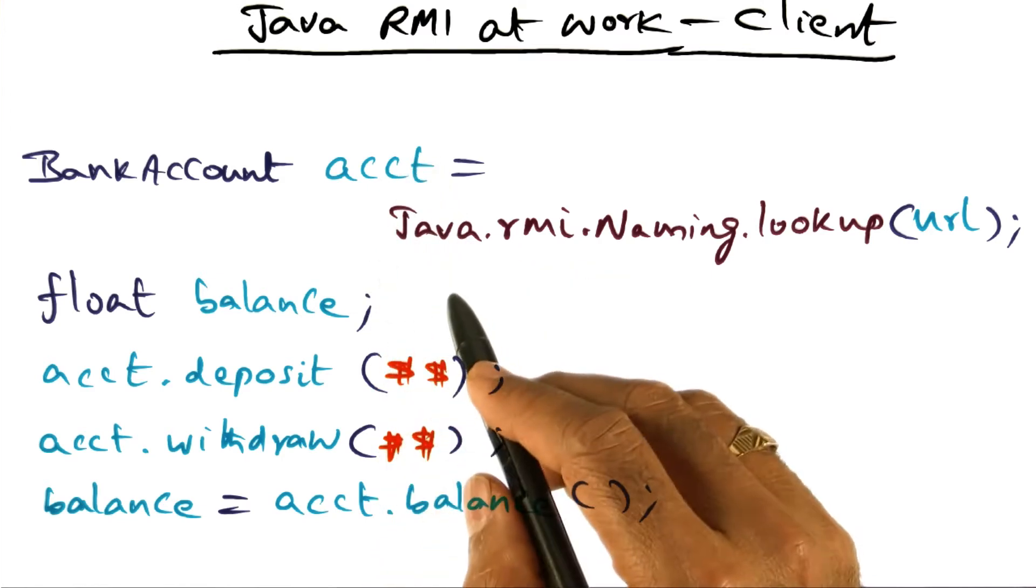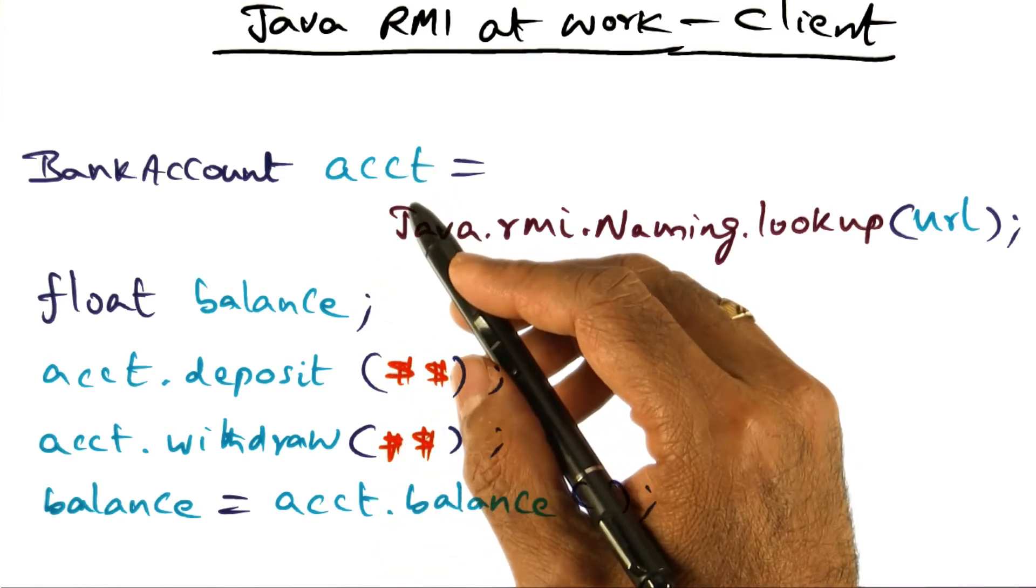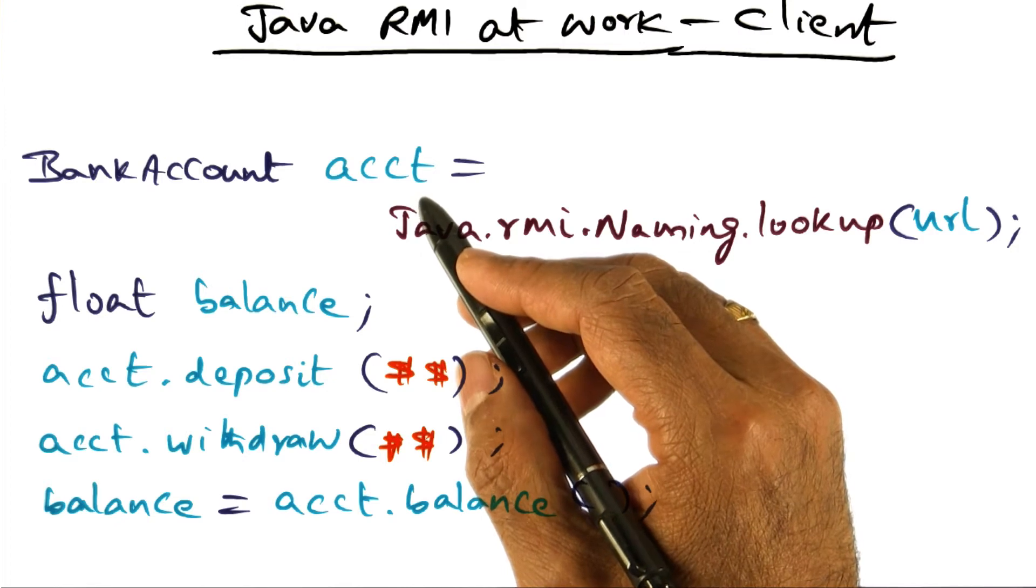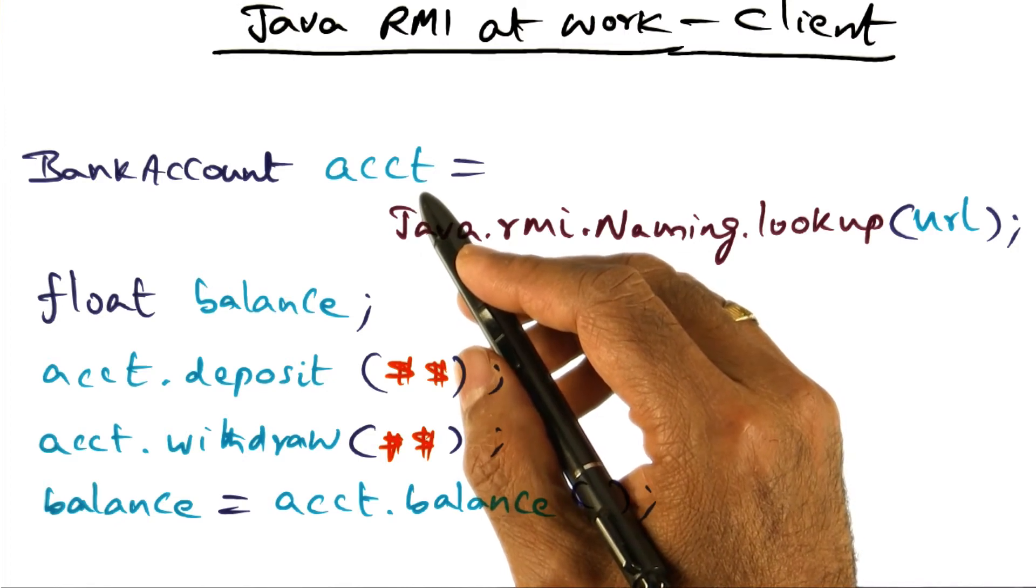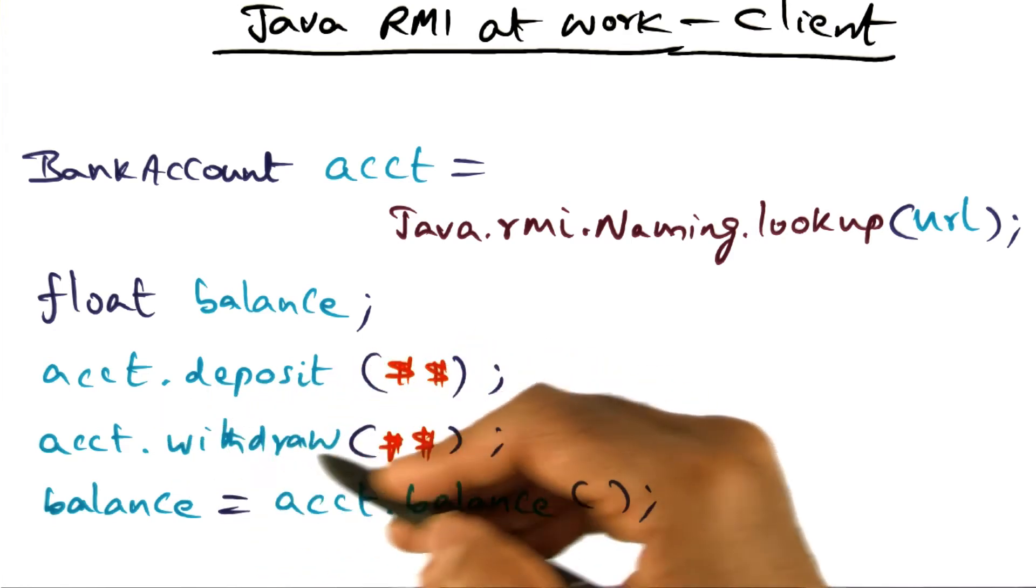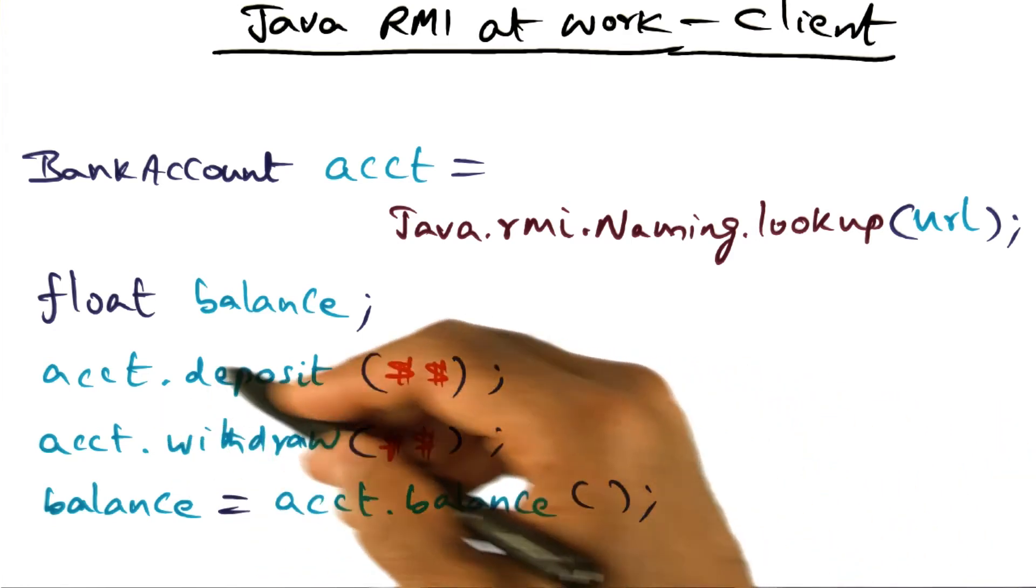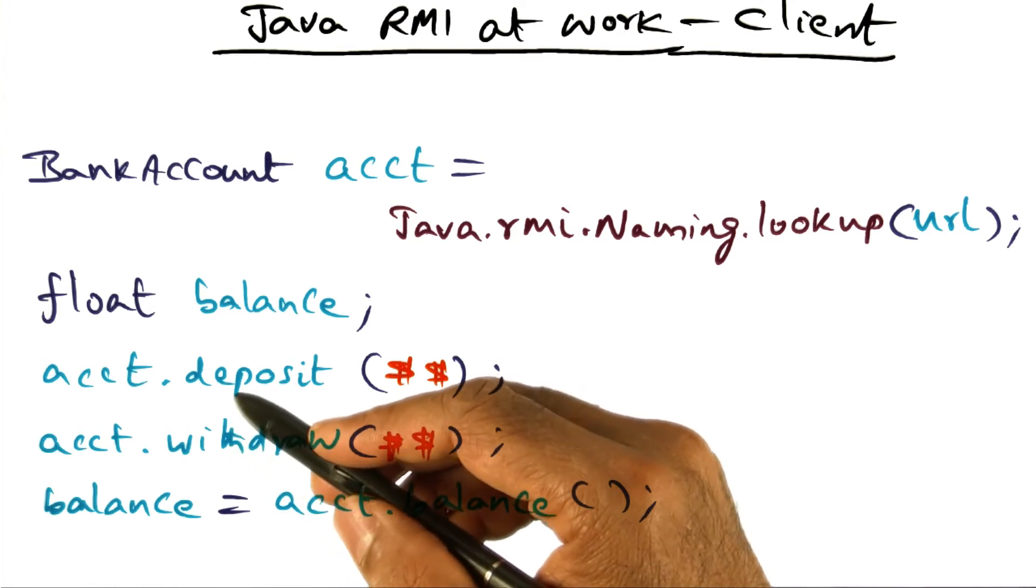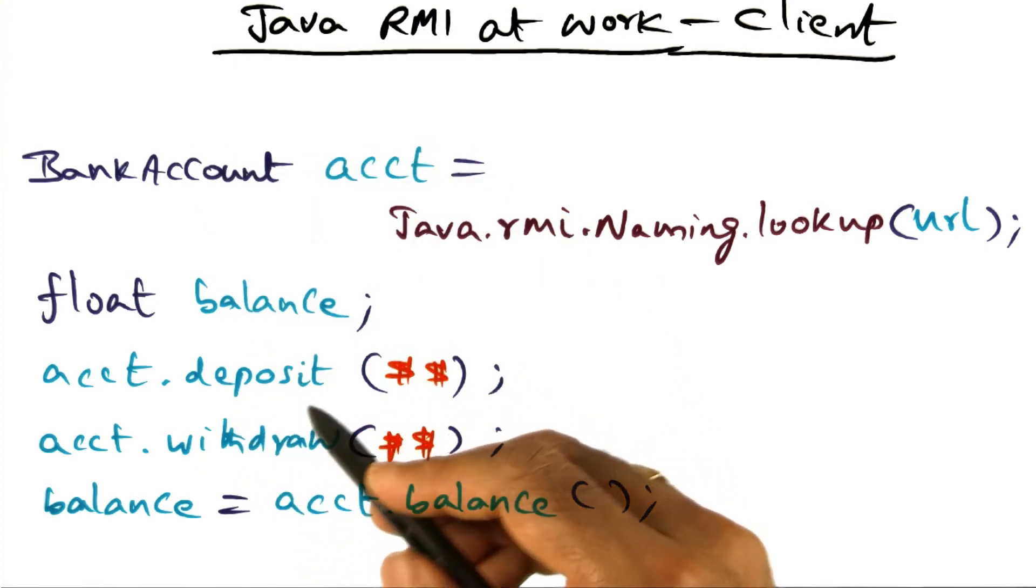Once I have that, I can do invocations on the methods available in the server object by simply calling those methods. I can do a deposit, withdraw, or balance check. All of this looks like normal procedure calls as far as the client is concerned.